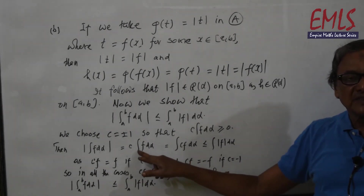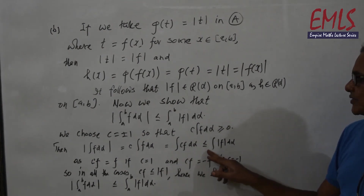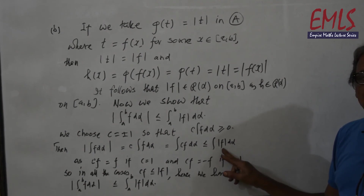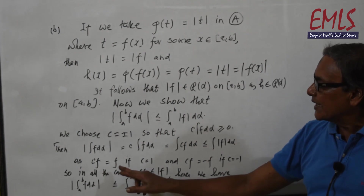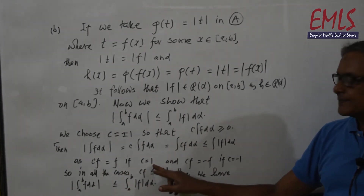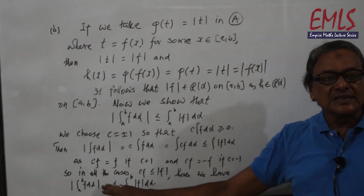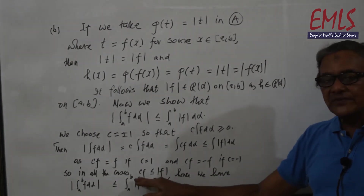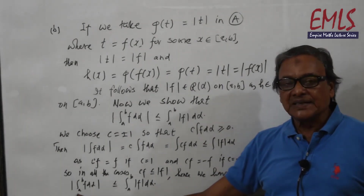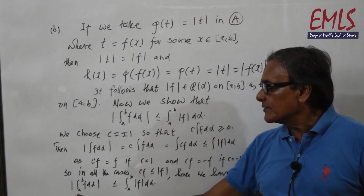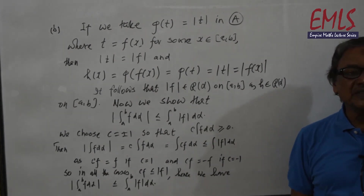By the property of definite integration, c·∫f dα = ∫cf dα, and this is less than or equal to ∫|f| dα, since cf ≤ |f| when c = 1 and cf = −f ≤ |f| when c = −1. So in all cases cf ≤ |f|. Hence |∫_a^b f dα| ≤ ∫_a^b |f| dα.